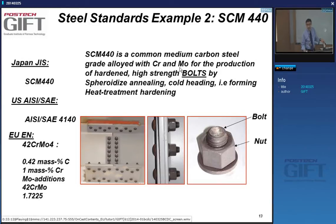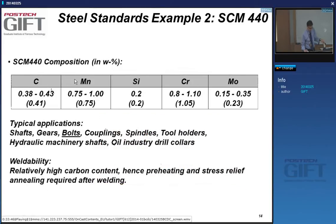Chrome and moly increase the hardenability of steel, enabling high-strength products. One application is bolts, made through a process of spheroidizing annealing, cold heading, and heat treatment to achieve final properties. The nut and bolt are not the same metal. The grade specification doesn't give you a single composition — it gives you a range for carbon, manganese, silicon maximum, and ranges for chrome and moly. The steel maker is free to choose within this range.